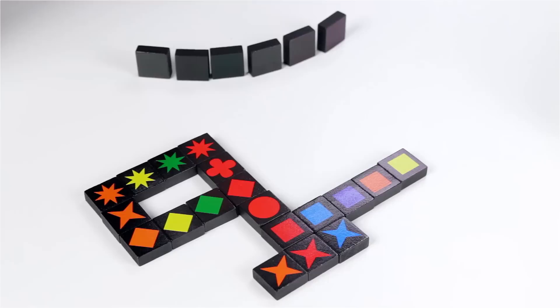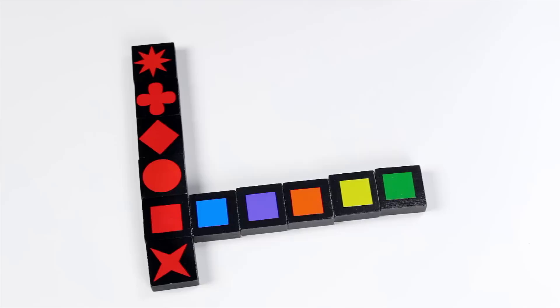Qwirkle is kind of like Scrabble with shapes and colors. Players start with six tiles that have variations of six possible shapes and six possible colors on them.